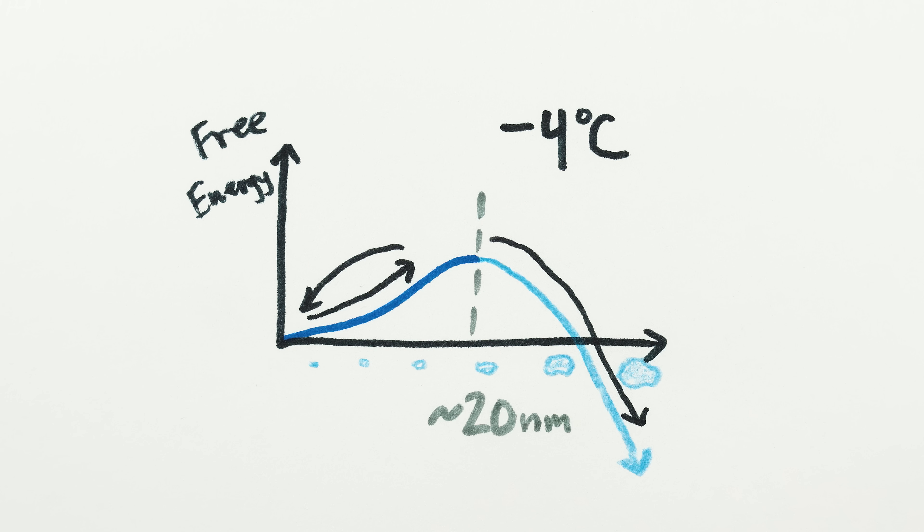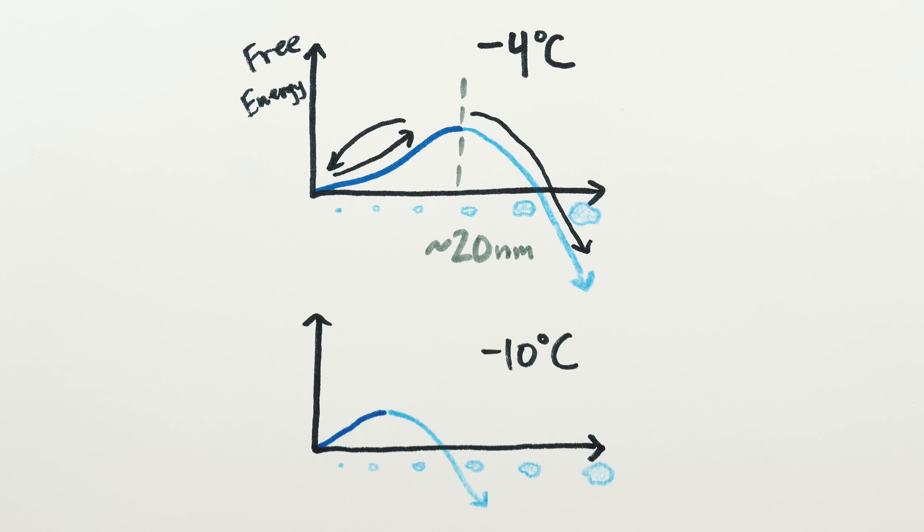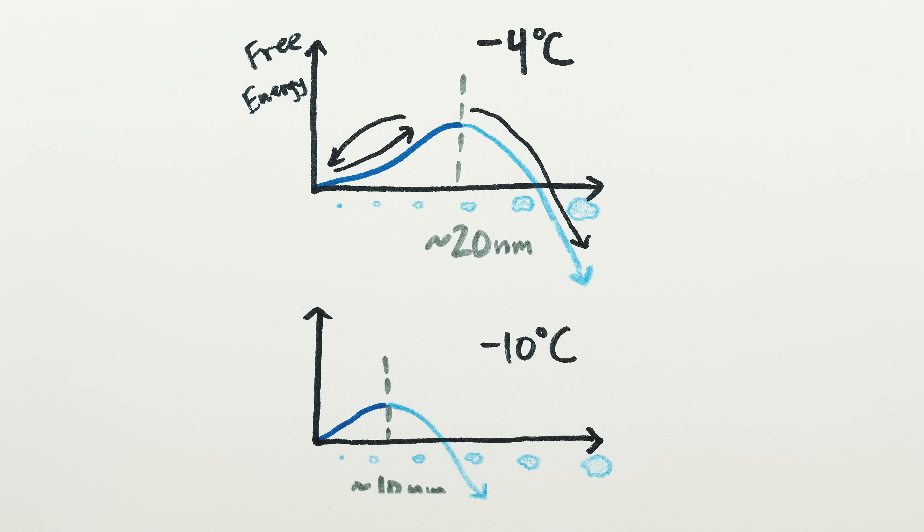At colder temperatures, the tipping point is smaller. For example, at negative 10 degrees celsius, you only need a crystal larger than around 10 nanometers in size, about 30 molecules across.